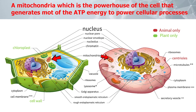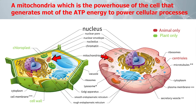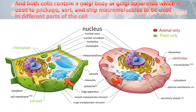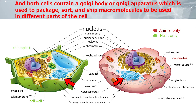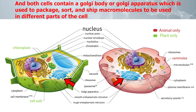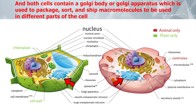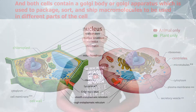Both cells contain mitochondria, which is the powerhouse of the cell that generates most of the ATP energy to power cellular processes. And both cells contain a Golgi body or Golgi apparatus, which is used to package, sort, and ship macromolecules to be used in different parts of the cell.